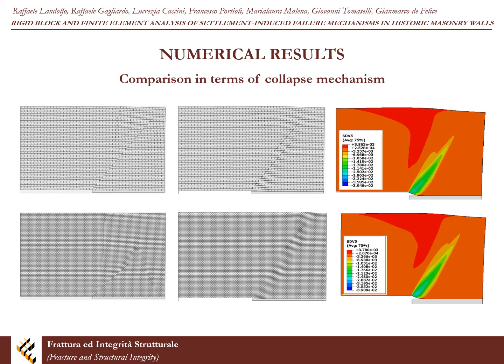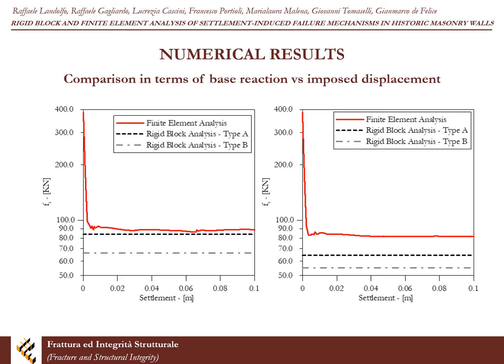The results of the two models are compared and discussed in order to highlight pros and cons of discrete and continuous formulations in the prediction of settlement-induced damage of masonry structures. The comparison was carried out in terms of collapse mechanisms and failure patterns, and in terms of evolution of the reaction at the base of the masonry structure involved in the settlement versus the imposed displacement.